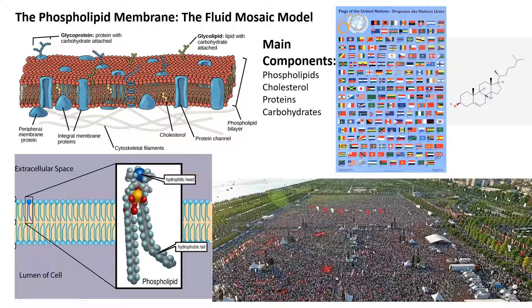The phospholipids are what the membrane is mostly made out of — it's like the glue or batter that keeps everything together. They orient themselves so that their non-polar tails are together on the inside because they repel water, while their polar heads, which are hydrophilic, remain on the outside because they like to interact with water.